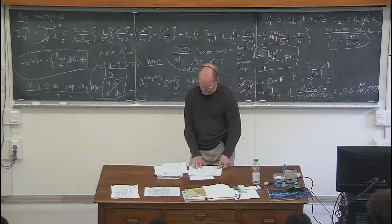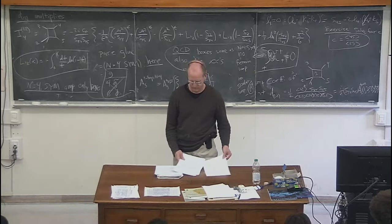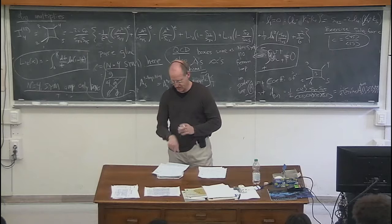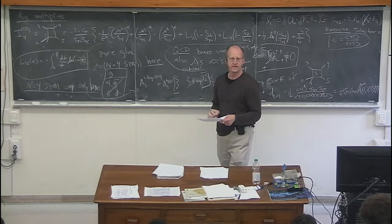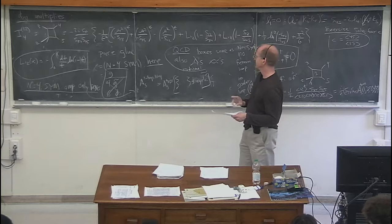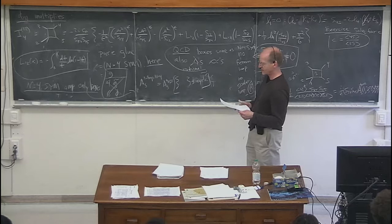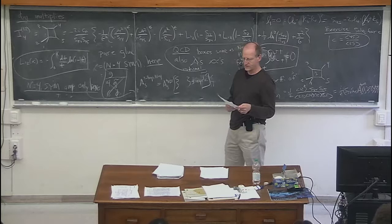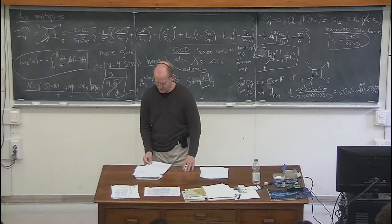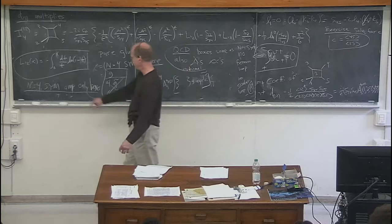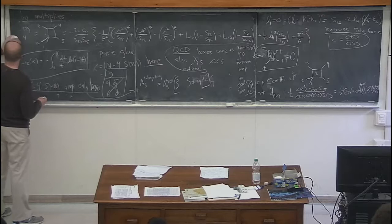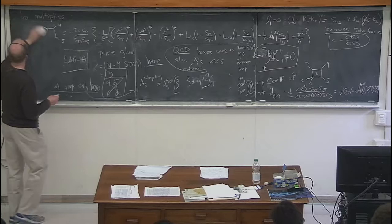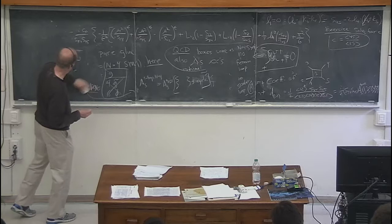There are at least five to ten different programs that can calculate these one-loop amplitudes using this kind of method. Now I want to turn to a discussion of the kinds of functions that enter amplitudes more generally. Not just one-loop amplitudes where the most complicated thing appearing is a dilogarithm, but more general amplitudes where you have to introduce new types of functions. I'll describe some methods physicists have been using to get a handle on these functions, talking about generalized polylogs and the notion of the symbol.